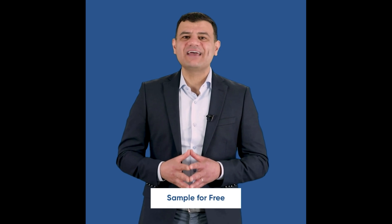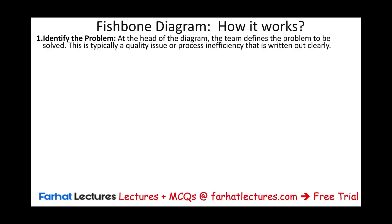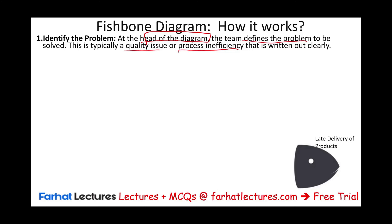The first thing you have to do is identify the problem you are dealing with. The head of the diagram is the problem. The team defines the problem to be solved — typically a quality issue or process inefficiency written out clearly. In our example, we're going to assume it's a late delivery of products. This is the problem; this is the head.